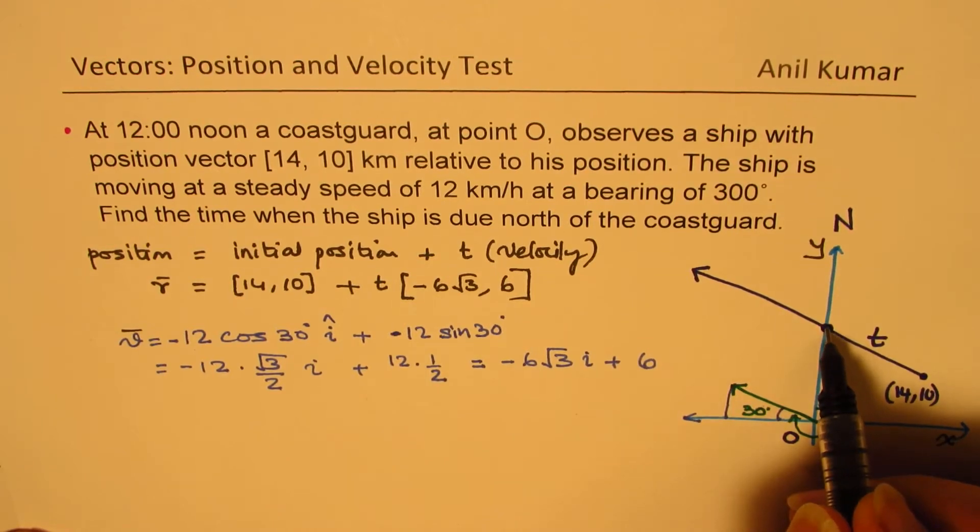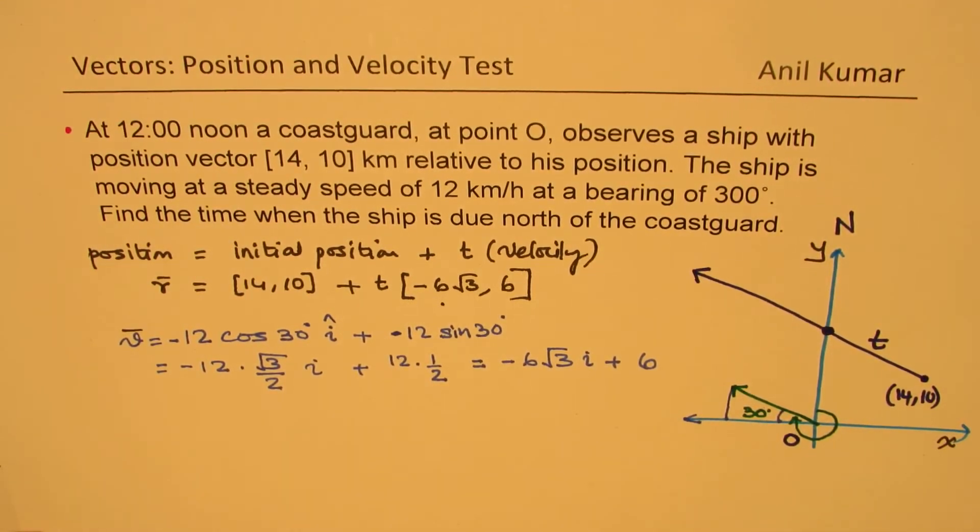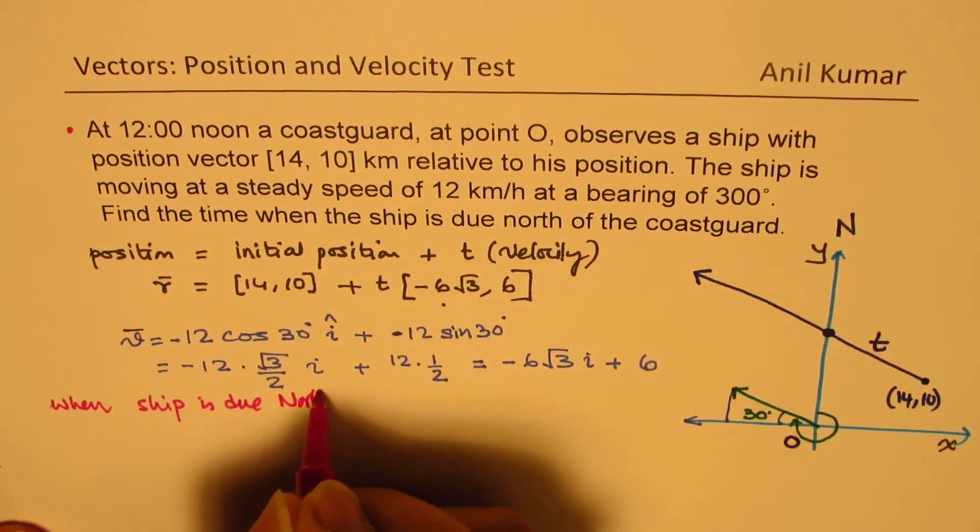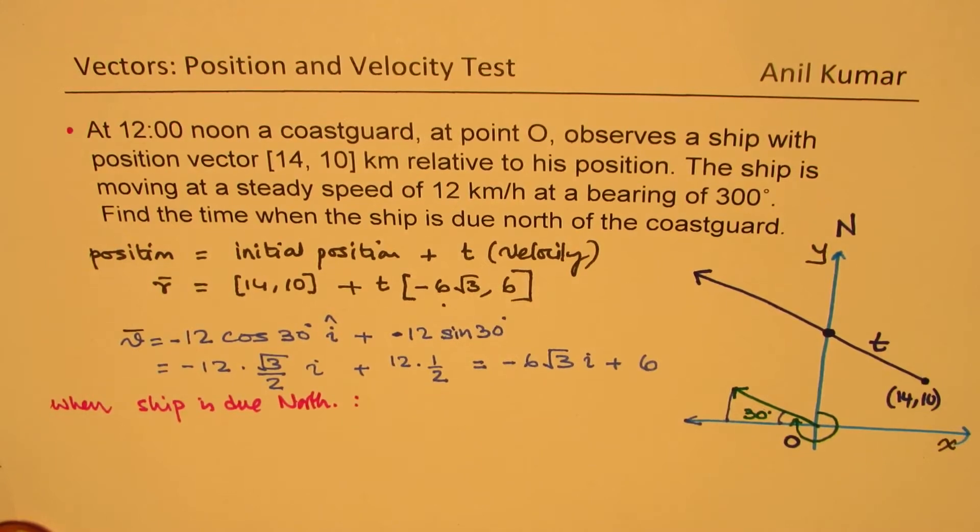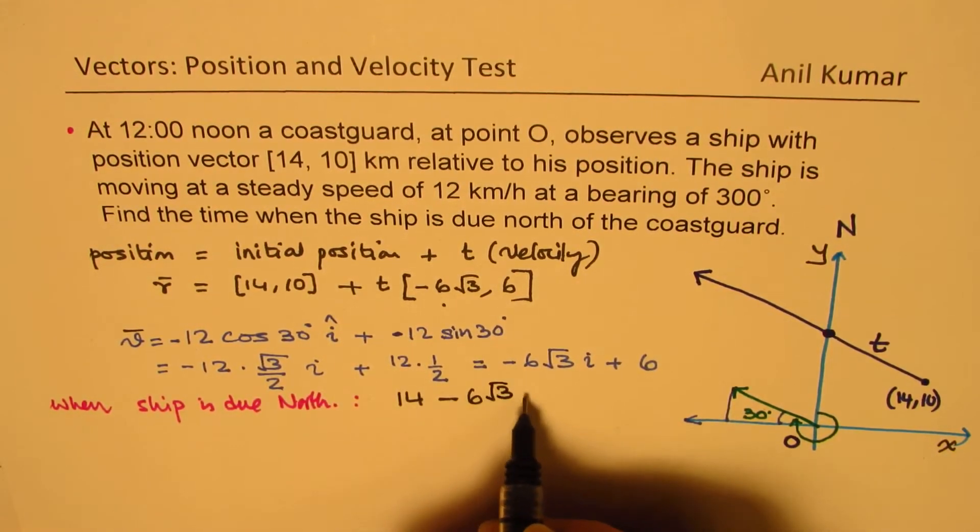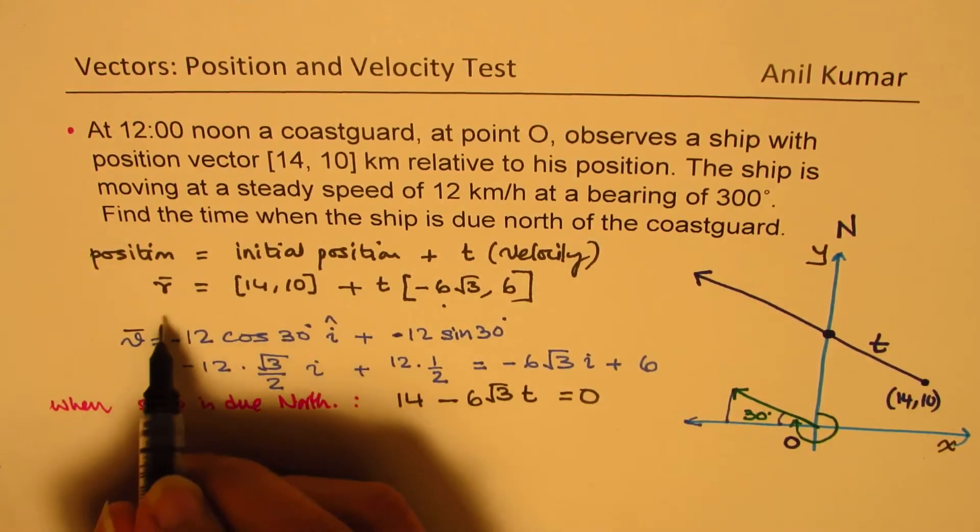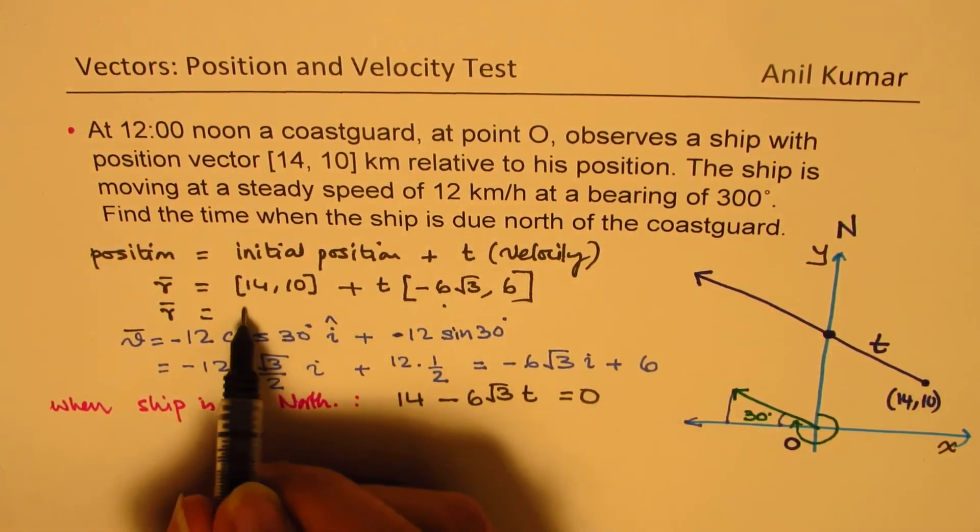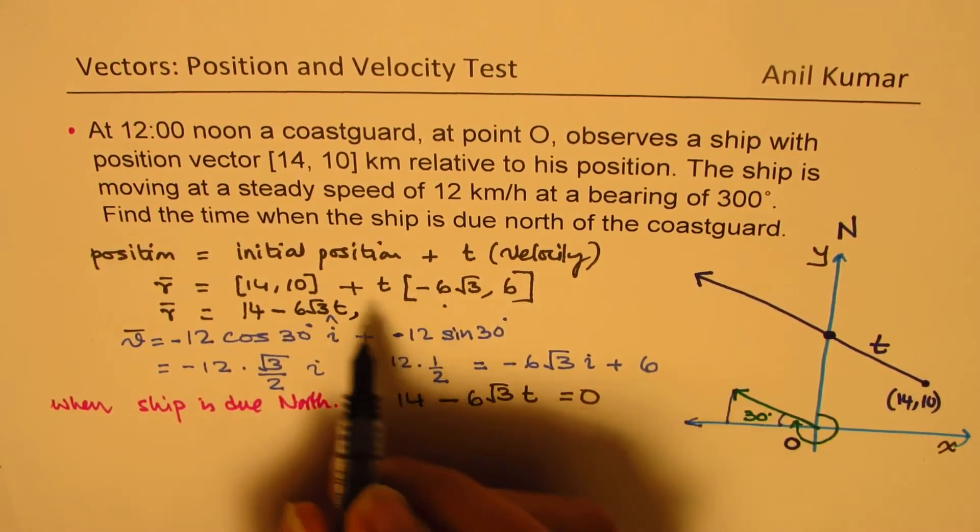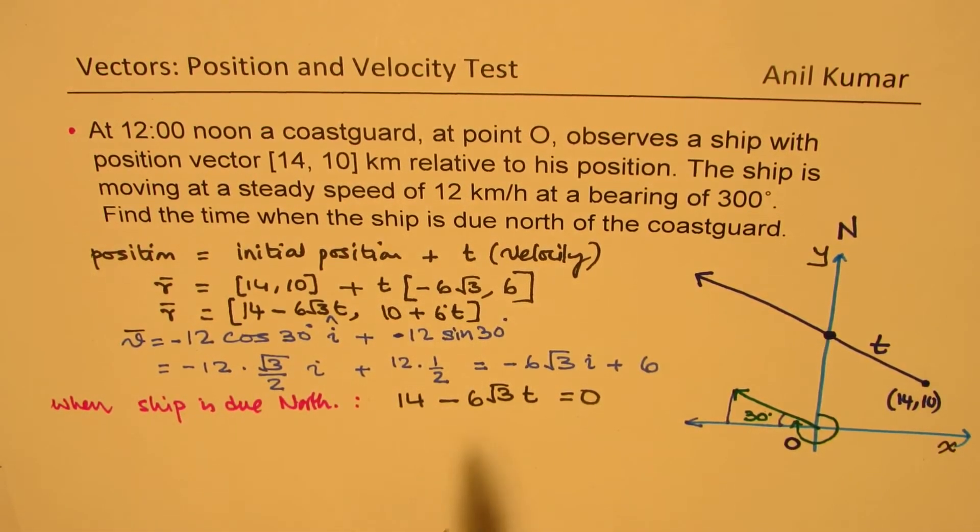When ship is due north at this position, then the X value becomes 0. This is very important to understand. When ship is due north, the X value, which is 14 - 6√3t, should equal 0. Because the position, I could write it like this: [14 - 6√3t, 10 + 6t]. So that is the vector. The x-component should be 0.